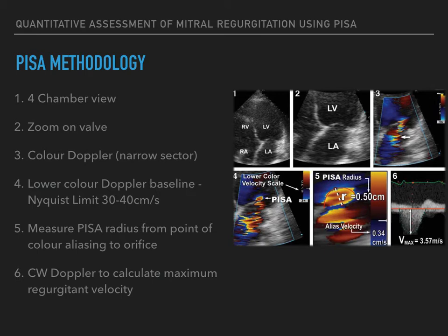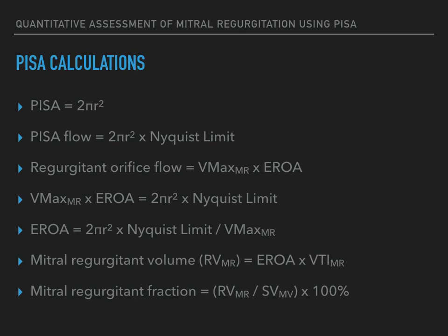Scrolling through the cine loop, the largest PISA will be found at mid-systole. The radius of the PISA is measured from the point of aliasing to the centre of the regurgitant orifice. Toggling colour Doppler off and on may be necessary to see the orifice clearly. PISA can now be calculated and is equal to 2πr², and flow within the PISA is thus 2πr² multiplied by the Nyquist limit.